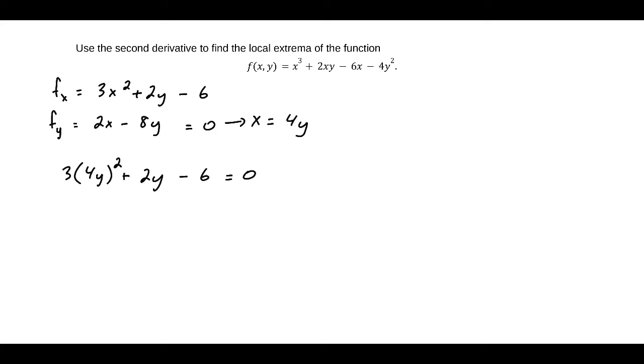Now that will become 48y squared plus 2y minus 6 equals 0. And this will factor, I'm going to skip some steps here, but this will factor as 2 open parenthesis 8y plus 3 close parenthesis open parenthesis 3y minus 1 close parenthesis equals 0. So that y is equal to negative 3 eighths or positive 1 third.